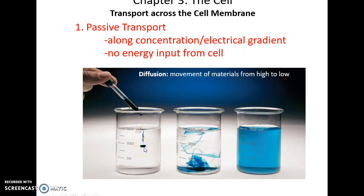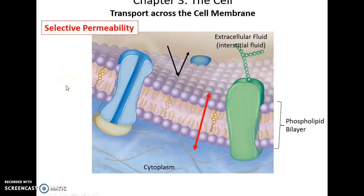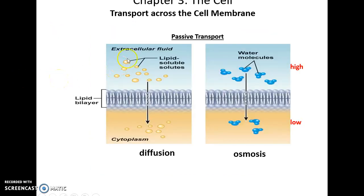For example, a drop of dye put into a beaker of water — the dye is high-concentrated in the drop and low-concentrated in the surrounding water — will rapidly start to diffuse out from the high-concentrated area and eventually will be evenly distributed throughout the solution. With selective permeability, things that can pass through via diffusion include small lipid-soluble materials that can pass through the hydrophobic barrier. Water is another substance that can pass through the cell membrane, going from high concentration to low concentration. This specific type of diffusion is called osmosis.